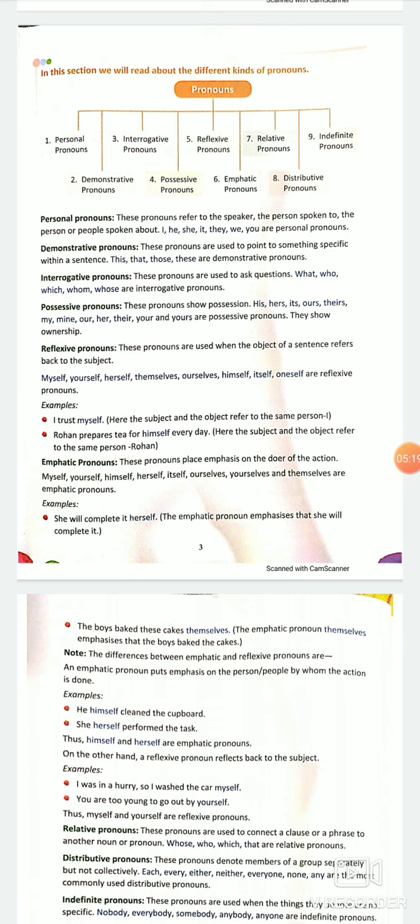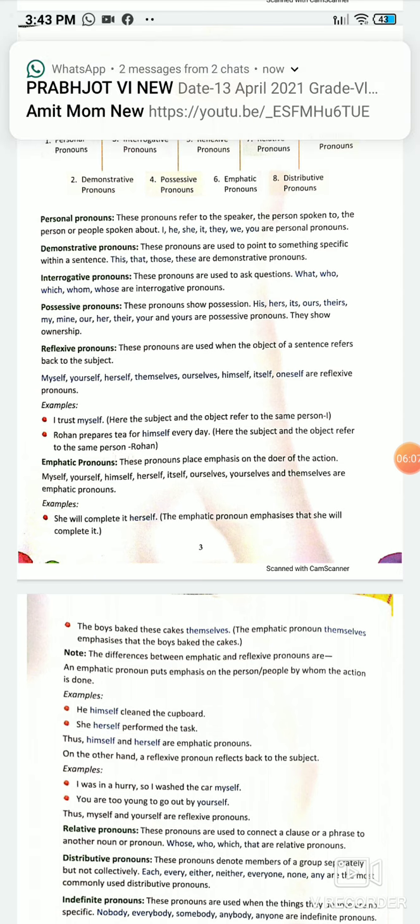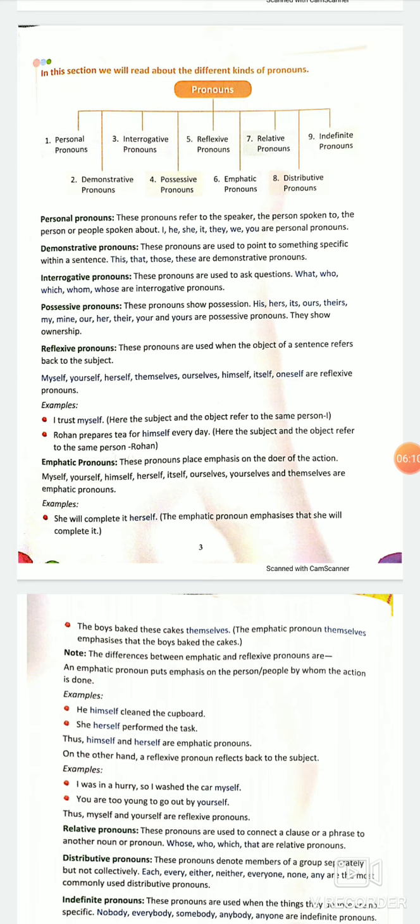What are demonstrative pronouns? The demonstrative word comes from demonstration. Out of 50 pens, I pick up one pen and say this is my pen. The word 'this' is demonstrating, is telling you that this particular pen is ma'am's pen. So demonstrative pronouns point out to something specific. Four demonstrative pronouns are this, that, these, and those used for singular and plural.